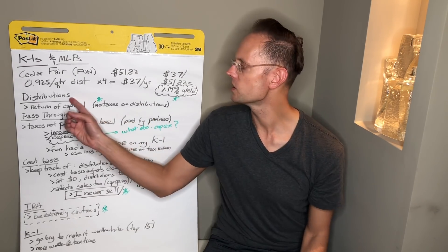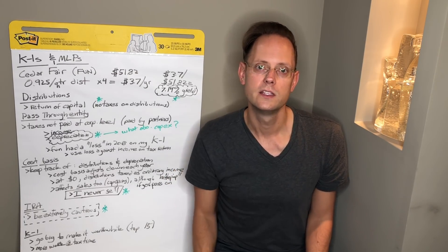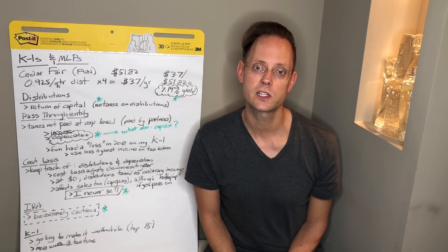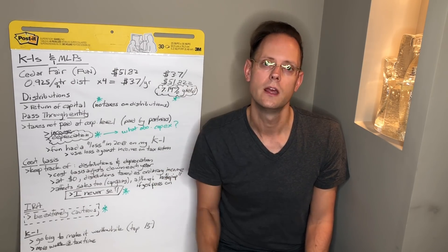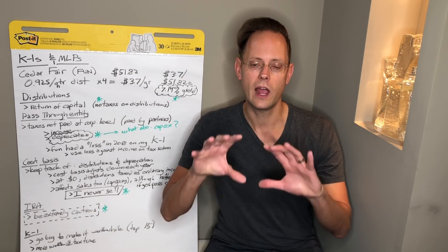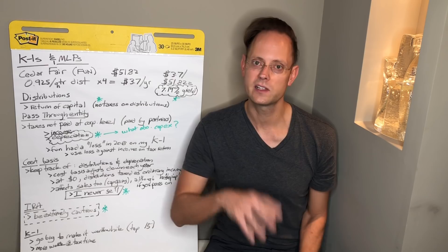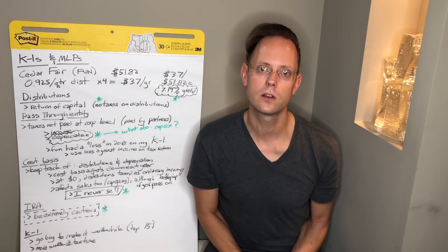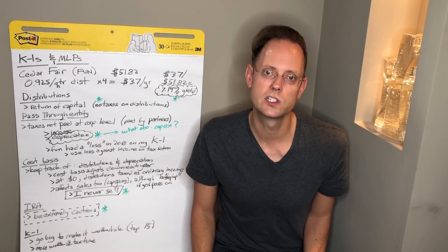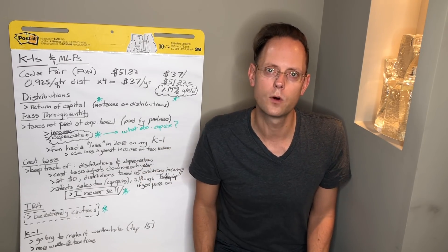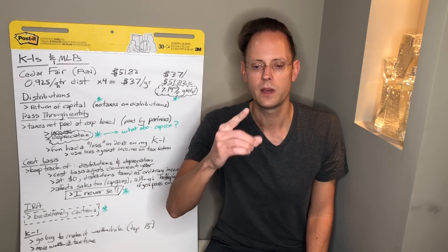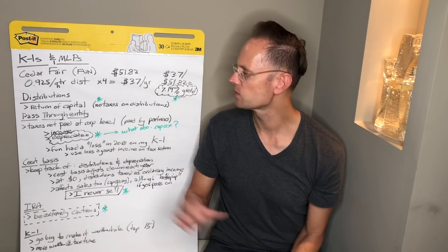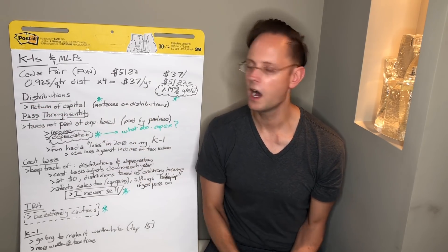The first thing I want to talk about is distributions. When one receives a quarterly dividend from a Master Limited Partnership, it is not a typical qualified dividend as with most other stocks. It is actually a distribution. These distributions from Master Limited Partnerships are actually considered a return of capital. So if I put $100 into a Master Limited Partnership and got a $10 distribution, they're returning $10 of my capital, and my cost basis adjusts downward accordingly. A return of capital from a Master Limited Partnership is not taxed — this is a non-taxable event.